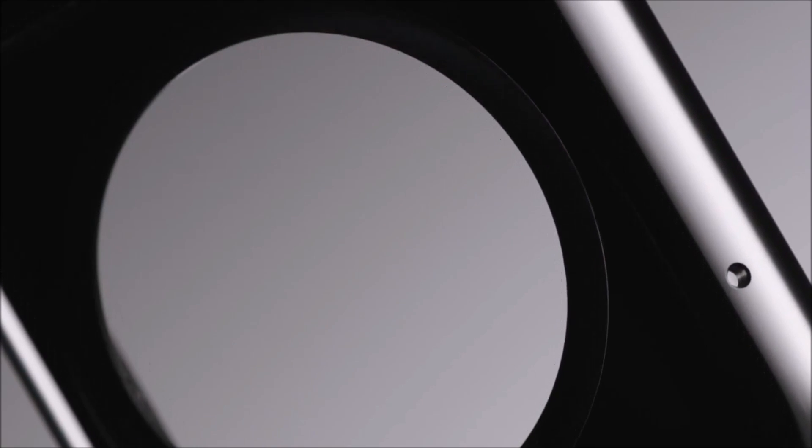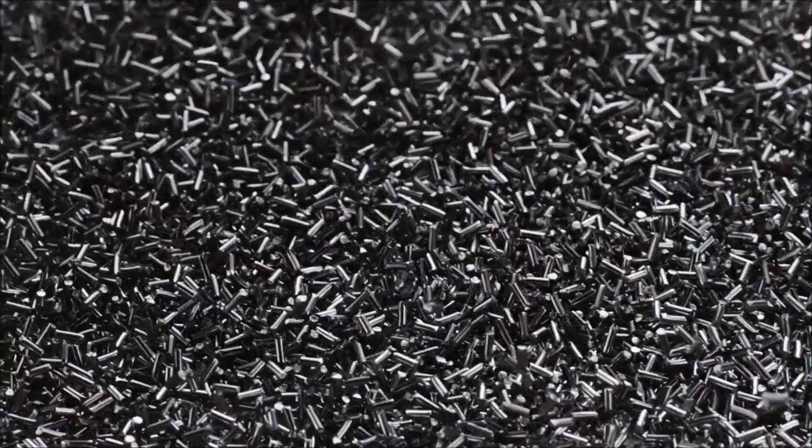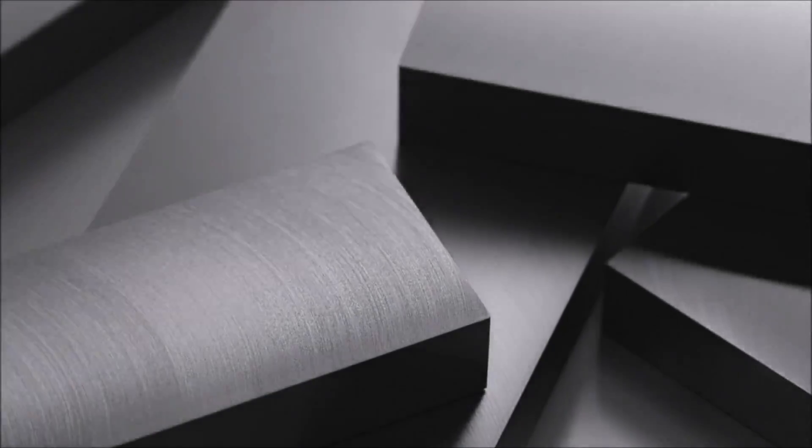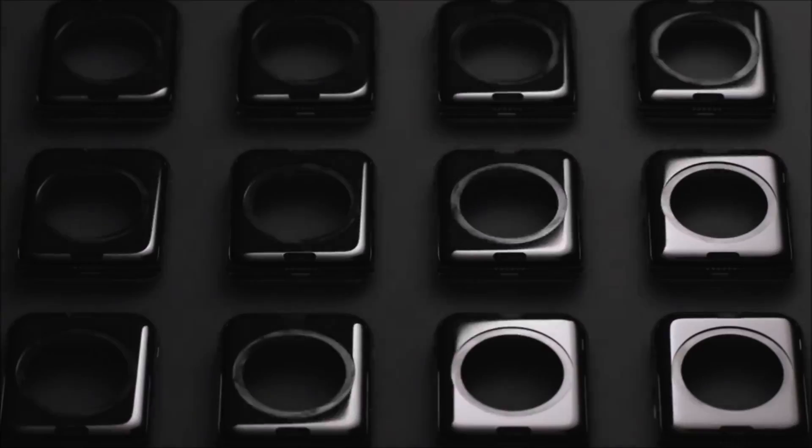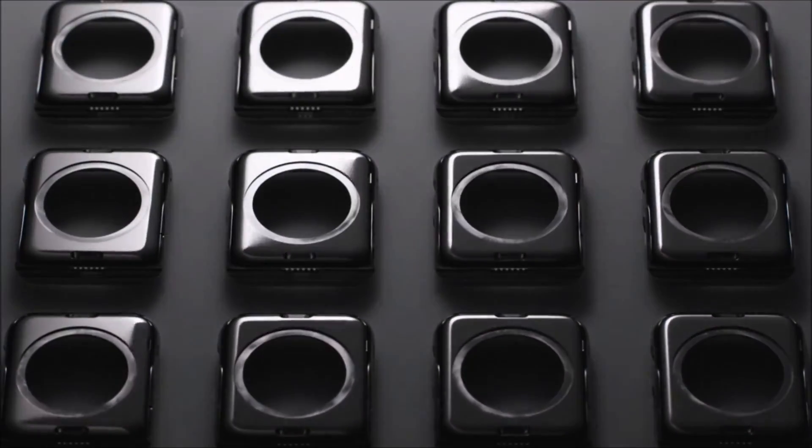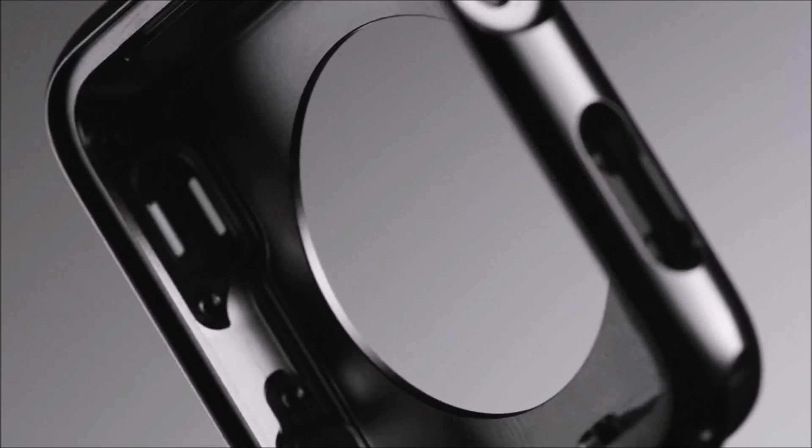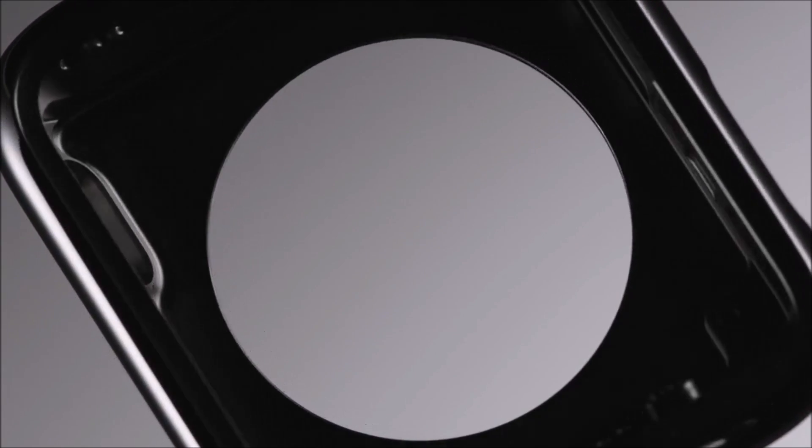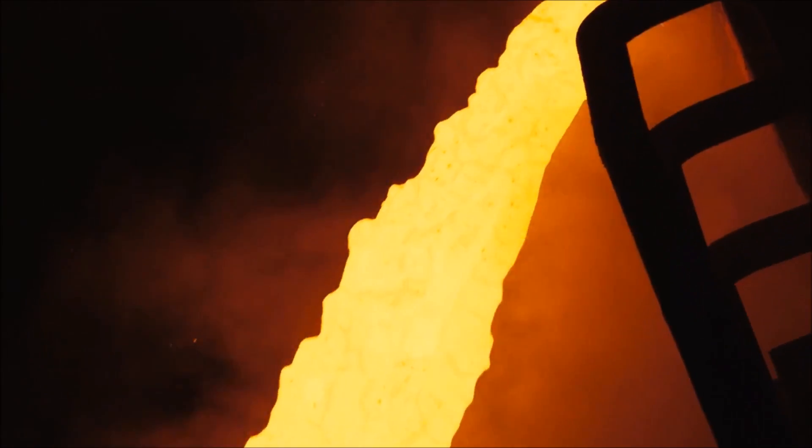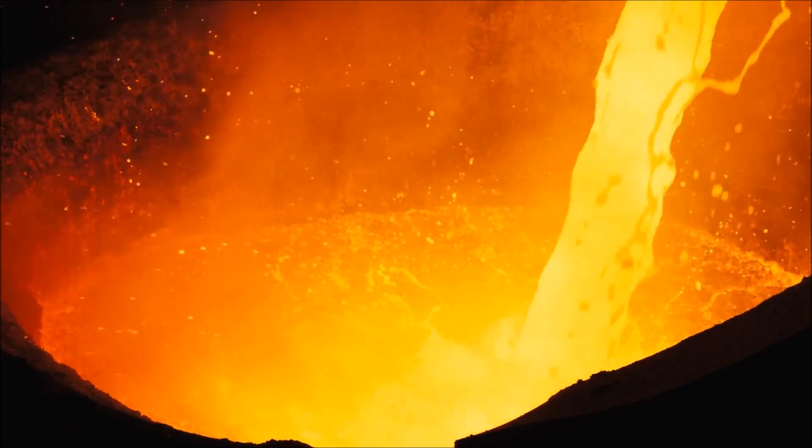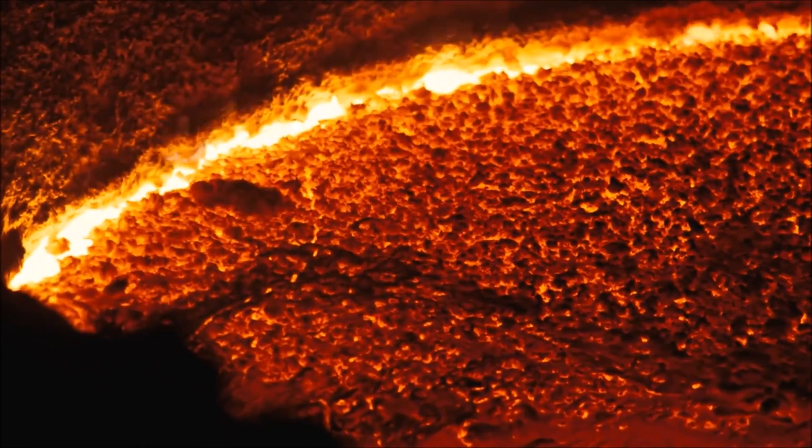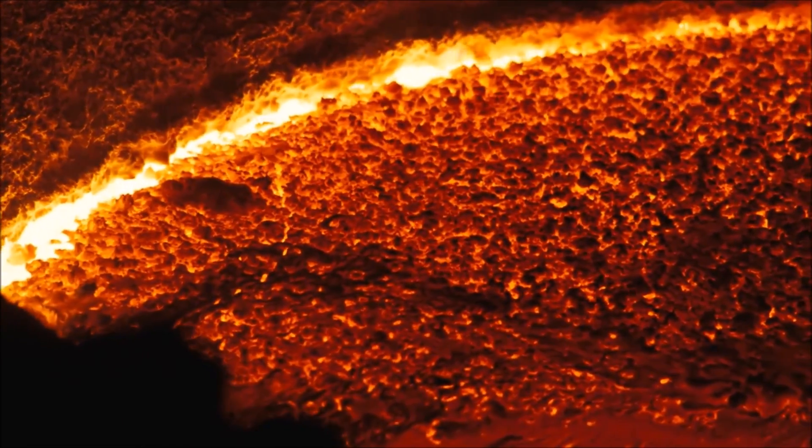For Apple Watch, we start with an alloy of stainless steel known for its strength and corrosion resistance. We then customize it through a series of alloying and processing steps to make it even stronger. While in its molten state, the composition of the metal is tightly controlled to minimize impurities and ensure hardness.